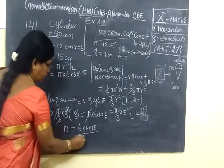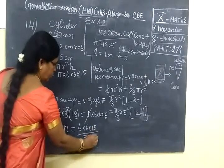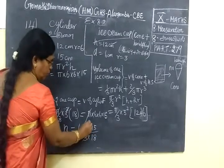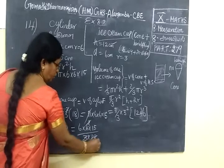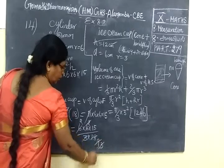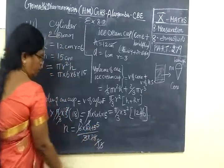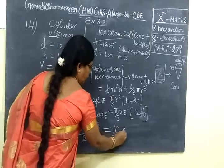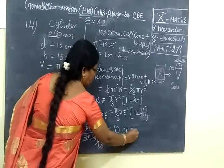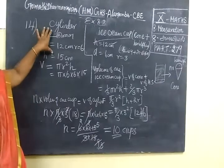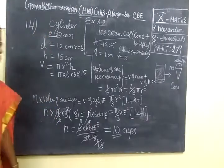By (3 squared times 18). This equals (6 × 6 × 15) / (9 × 18). Simplifying: equals 10. So we need 10 cups to fill the ice cream from the cylindrical vessel. Thank you.